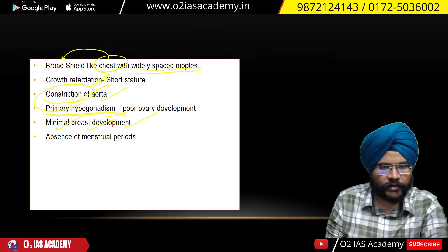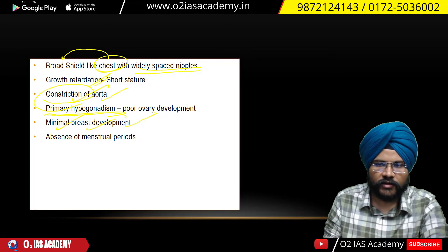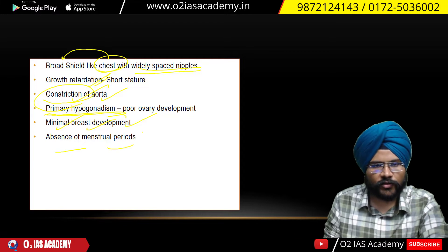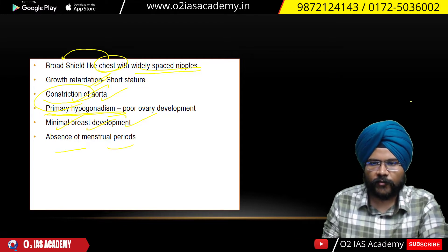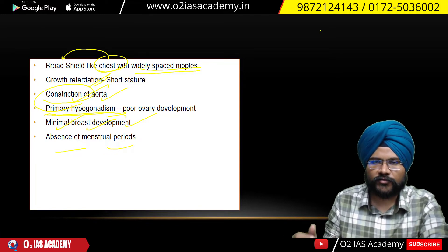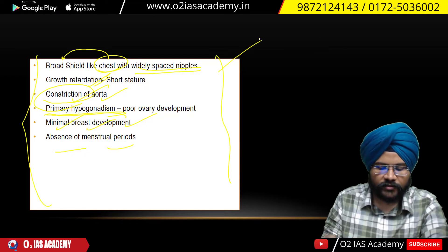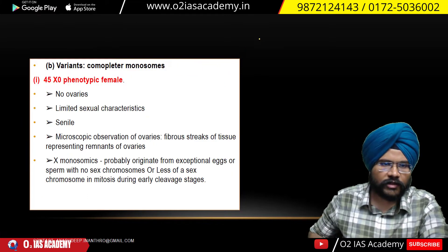Then there is minimal breast development — the breast remains underdeveloped, as we already discussed. There is also absence of menstruation periods. If you have hypogonadism — if the gonad is not properly developed — then menstruation cycles cannot occur. These are the somatic symptoms seen in Turner syndrome.